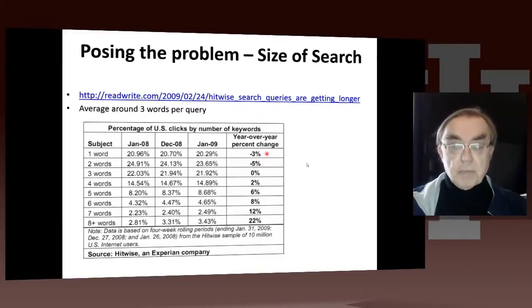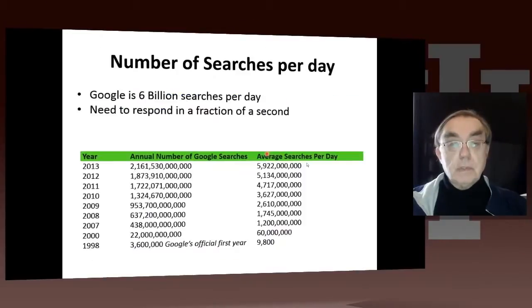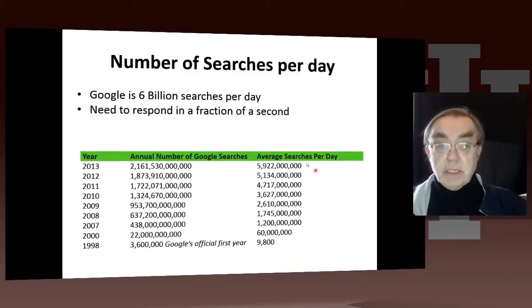This isn't the usual problem with the web — it's not always easy to get exactly the data you want. Here we have the number of searches per day, and in 2013 it is almost 6 billion. This is Google's searches per day.